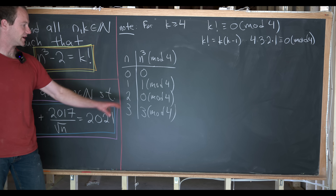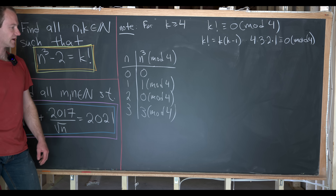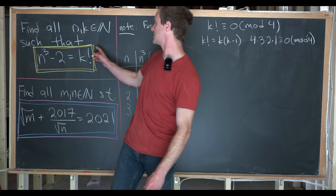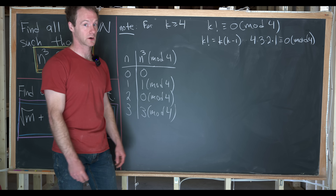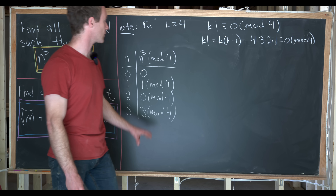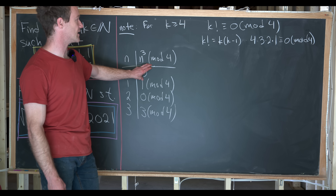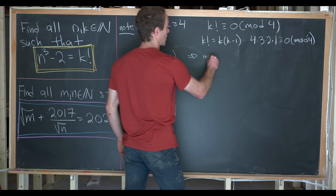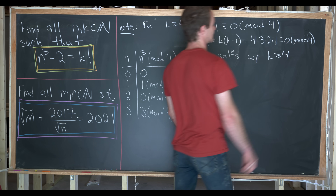The only possible perfect cubes mod 4 are 0, 1, and 3. But in order for n³ - 2 = k! to be solvable when k is greater than or equal to 4, we would need n cubed to be congruent to 2 mod 4. This chart and observation together imply that there are no solutions with k greater than or equal to 4.